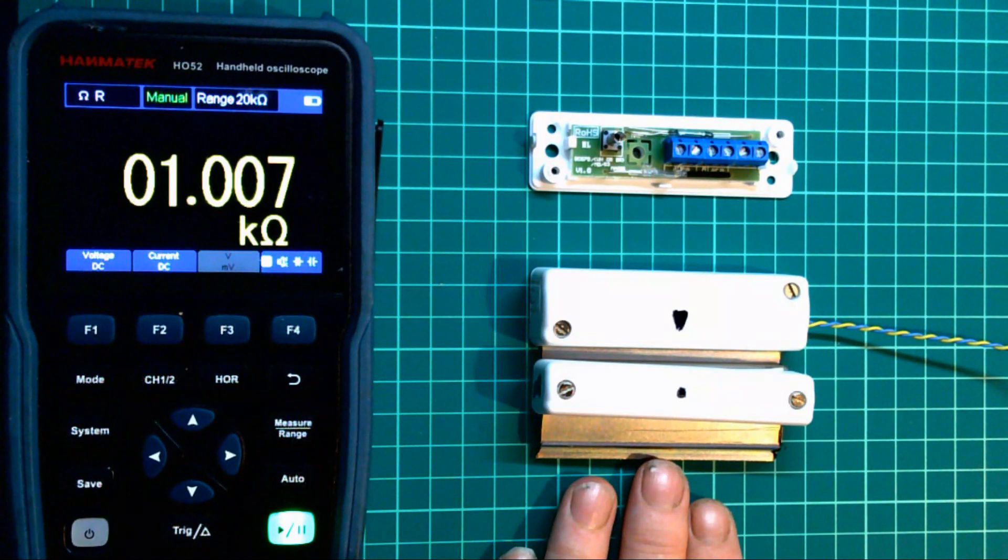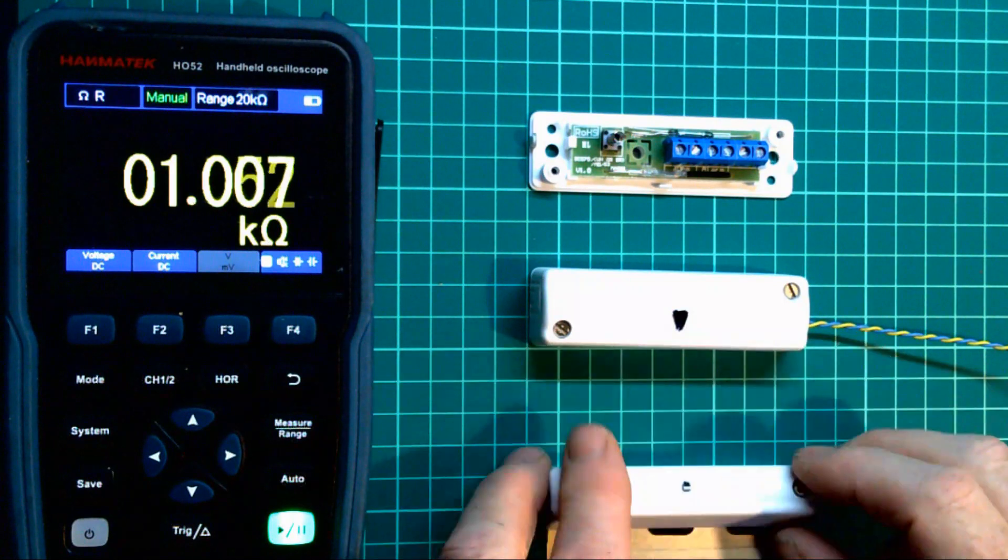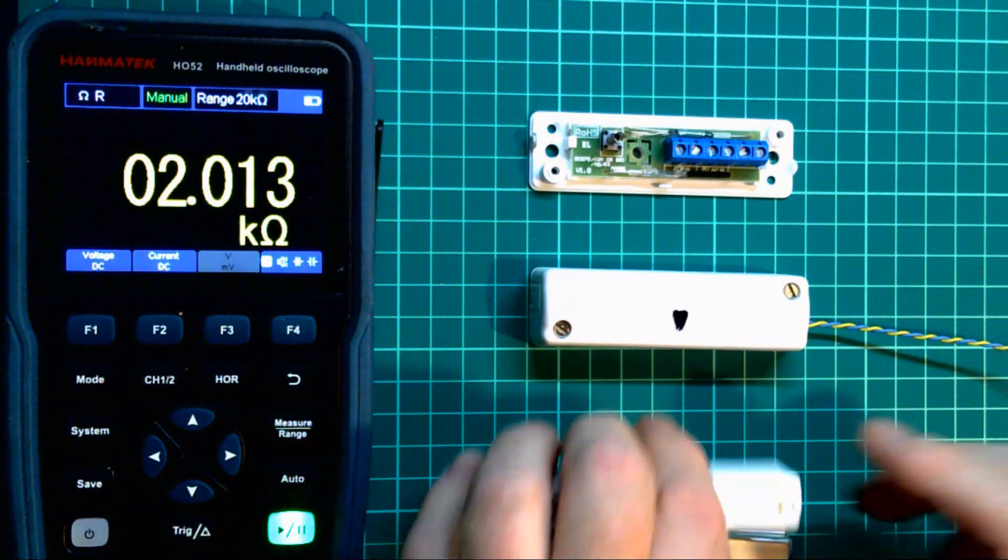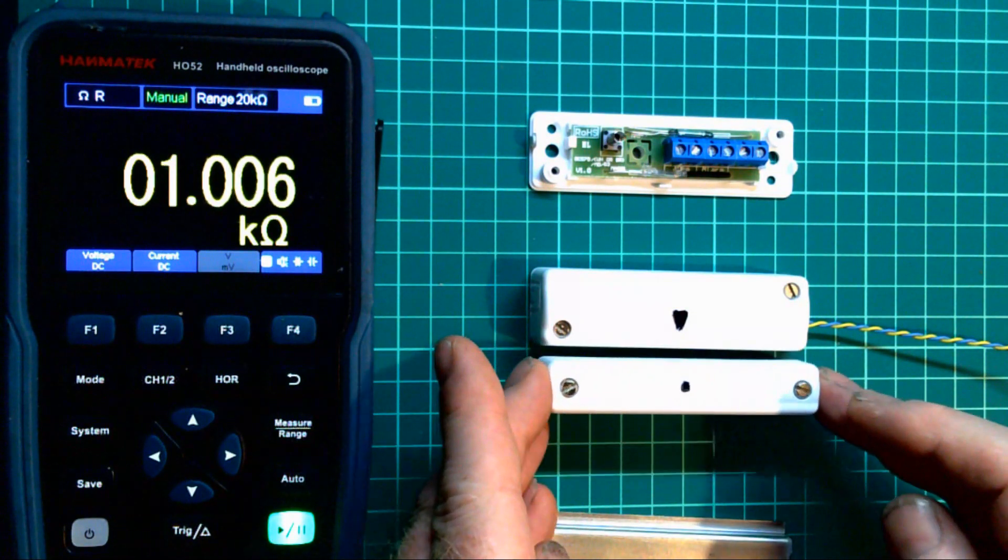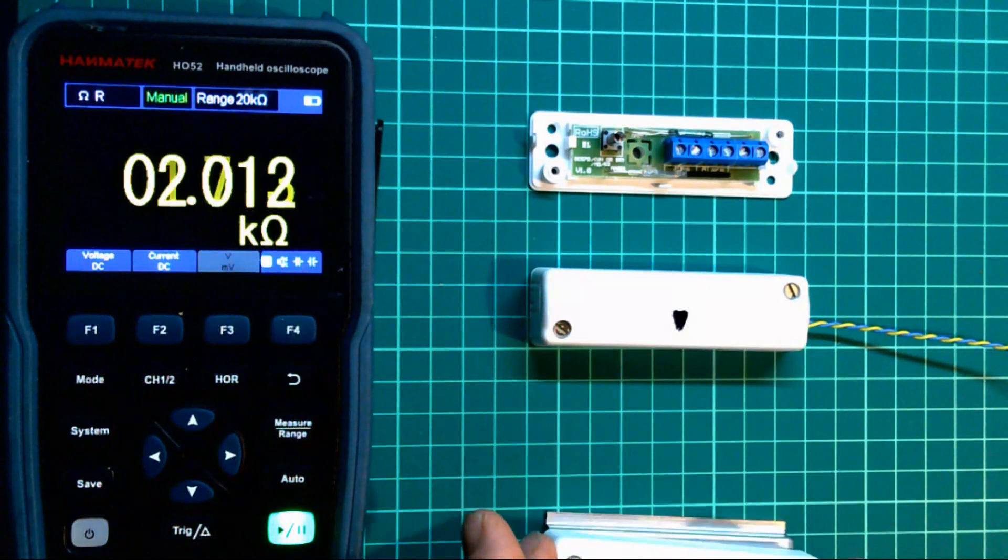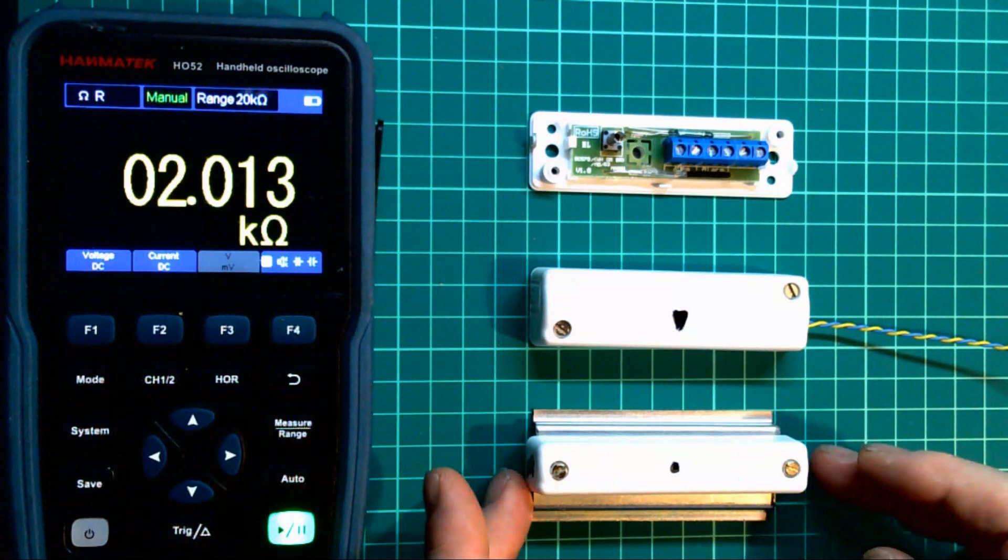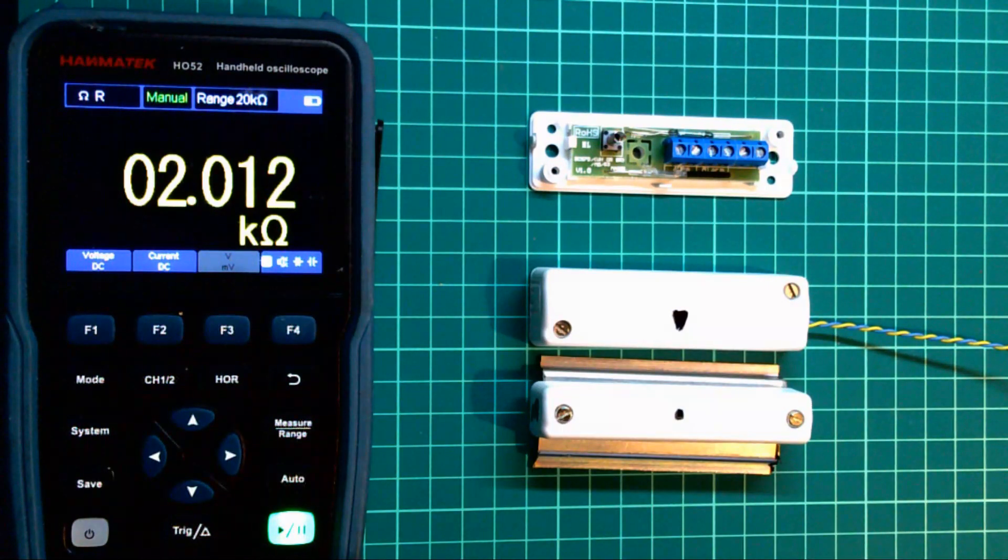So the main thing to worry about is the back reed and the lining up of these. And if you put it on metal doors, to make sure they're both level with each other precisely. Okay, thanks for listening.